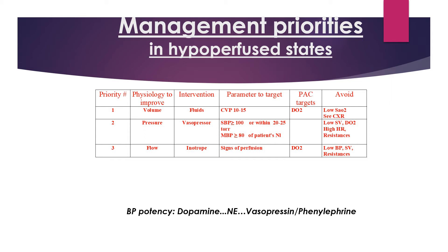To improve pressure, give vasopressors. Target CVP around 100 mmHg or within 20–25 torr, and a mean blood pressure of more than 80 mmHg. Avoid low stroke volume, high heart rate, and high resistance.